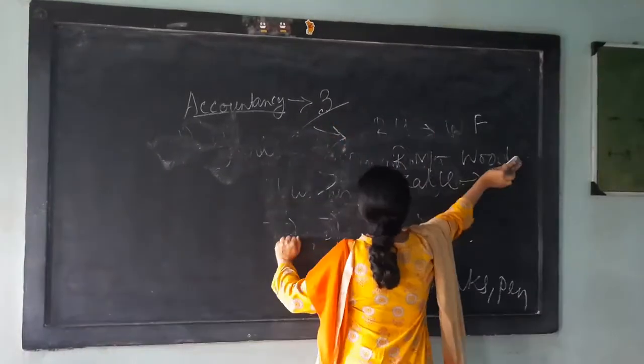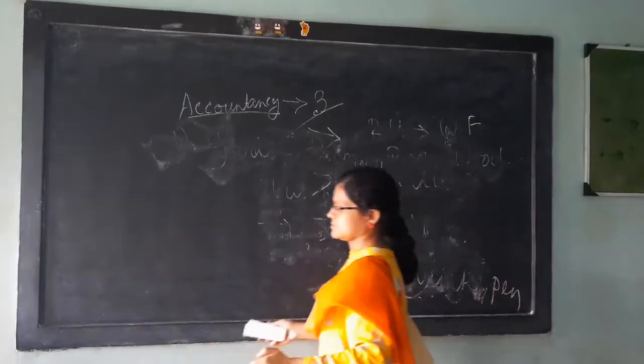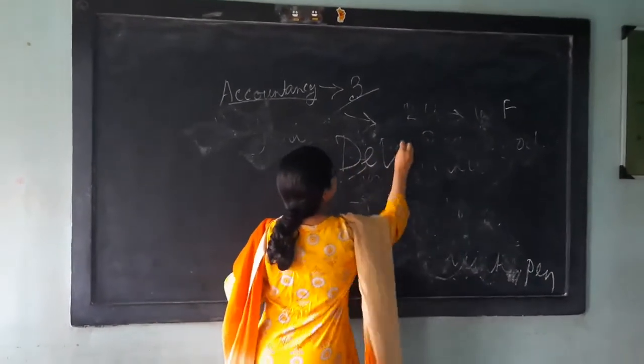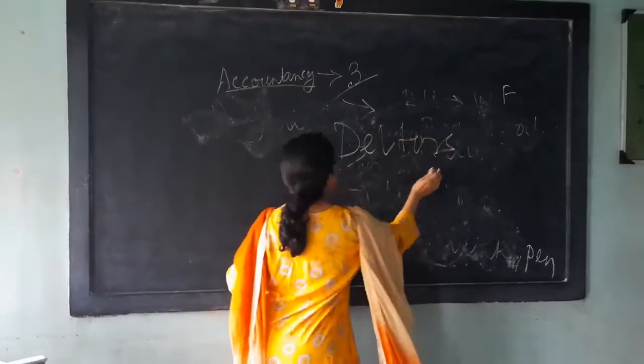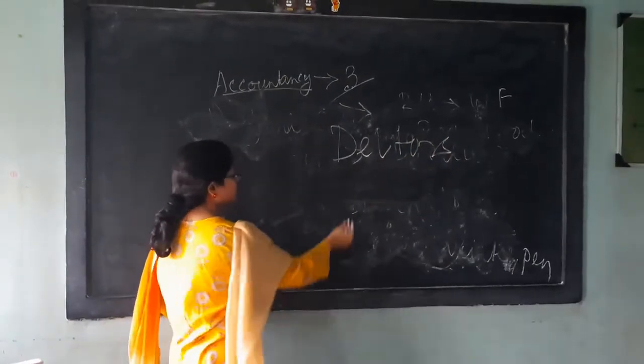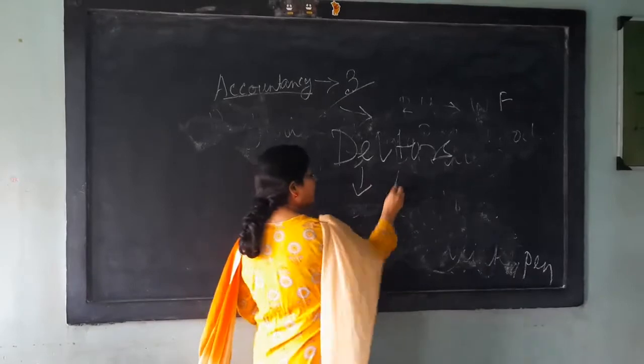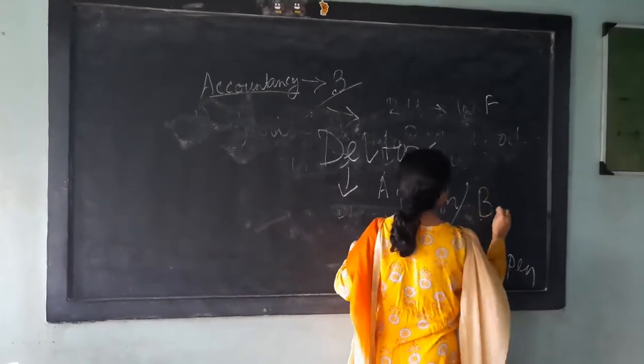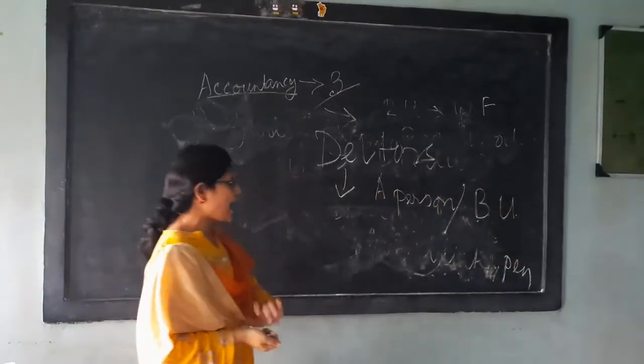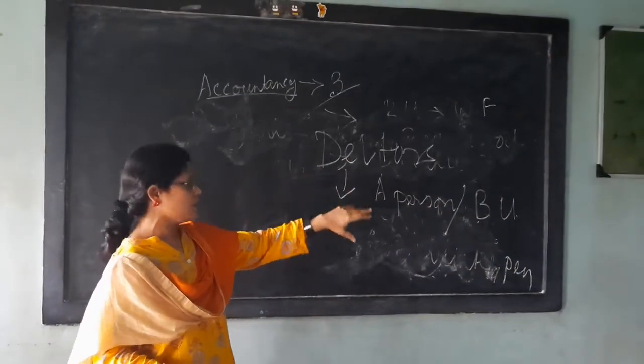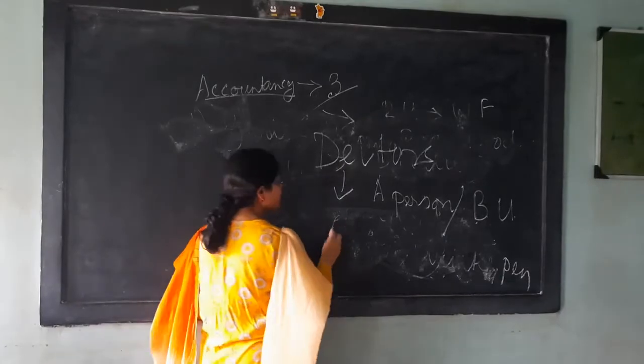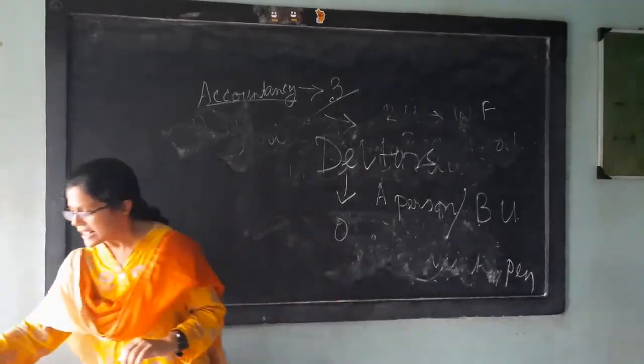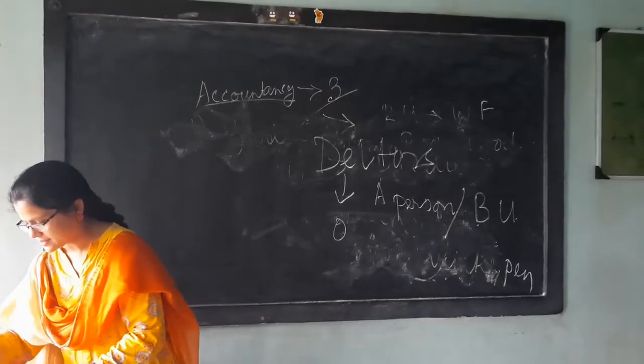Coming to debtors. D-E-B-T-O-R-S, debtors. What is debtors? A person, this can be only a person or it can be a business unit, a person and or a business unit who owes money from the business, means they take money from the business, they are known as debtors.